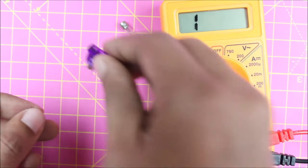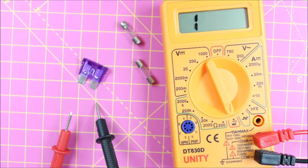And again you'll hear a beep. So that is it, this is how you can quickly check if your fuse is working using a multimeter. Thanks for watching.